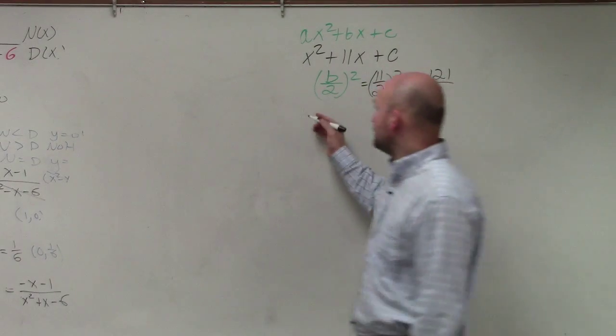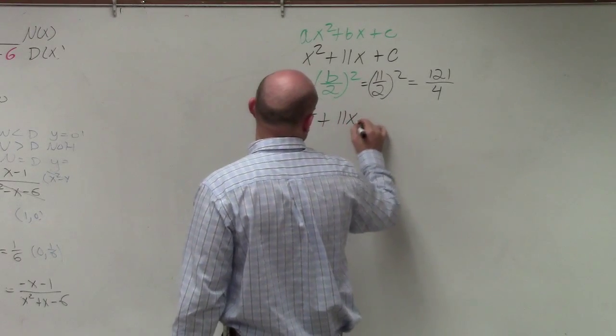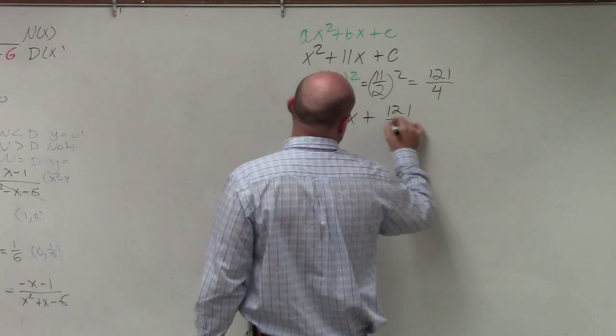Then they wanted you to write it as a perfect square. x squared plus 11x plus 121 over 4.